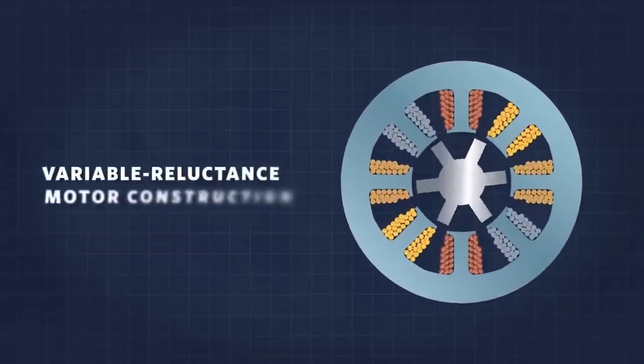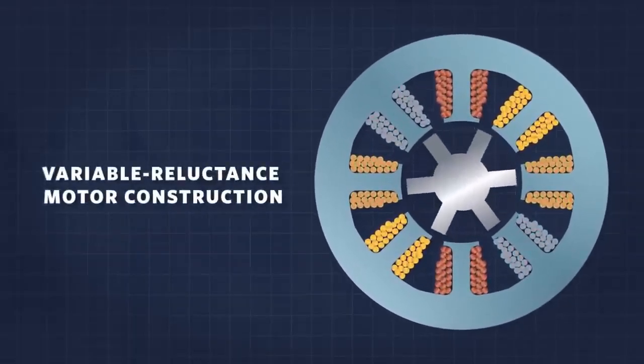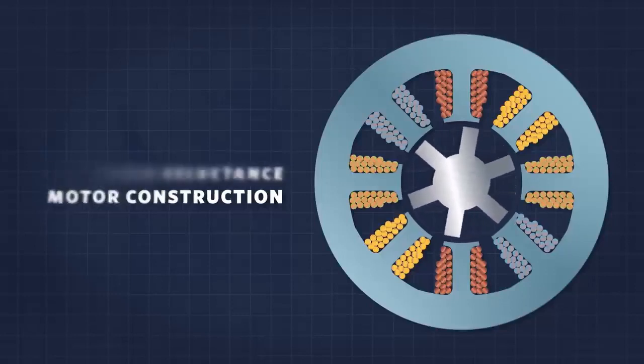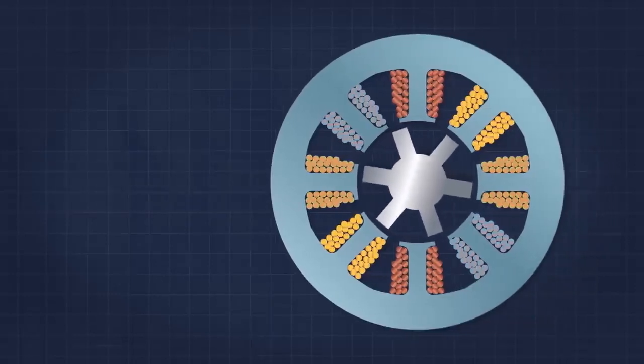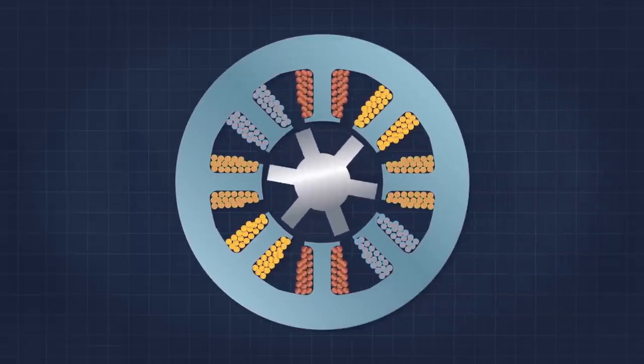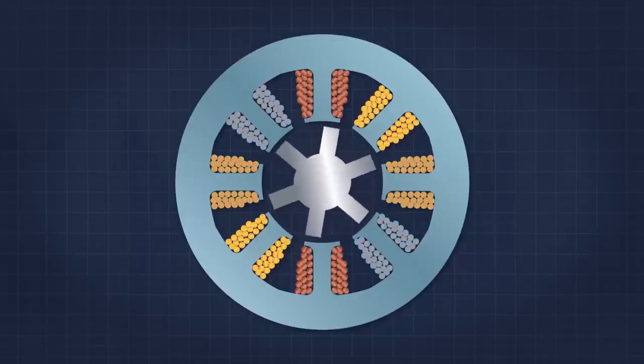Traditional variable reluctance steppers have many stator electromagnets arranged around a central gear-shaped iron rotor. When any individual electromagnet is energized, the geared iron tooth closest to that electromagnet will be drawn into alignment. When the next electromagnet is turned on and the preceding one turned off, the gear moves slightly to realign, and so on.